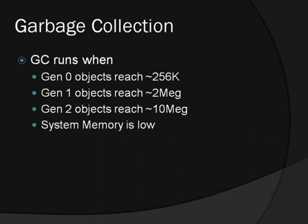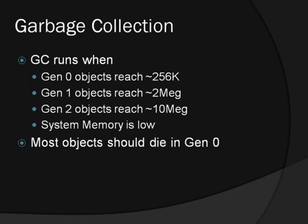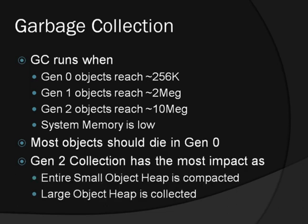.NET actually optimises these thresholds based on the memory usage profile of the application. It's most productive to collect Gen 0 objects frequently — these are the objects most likely to be rootless. Collecting Gen 2 objects has the biggest performance impact because the entire heap is collected, as is the large object heap.